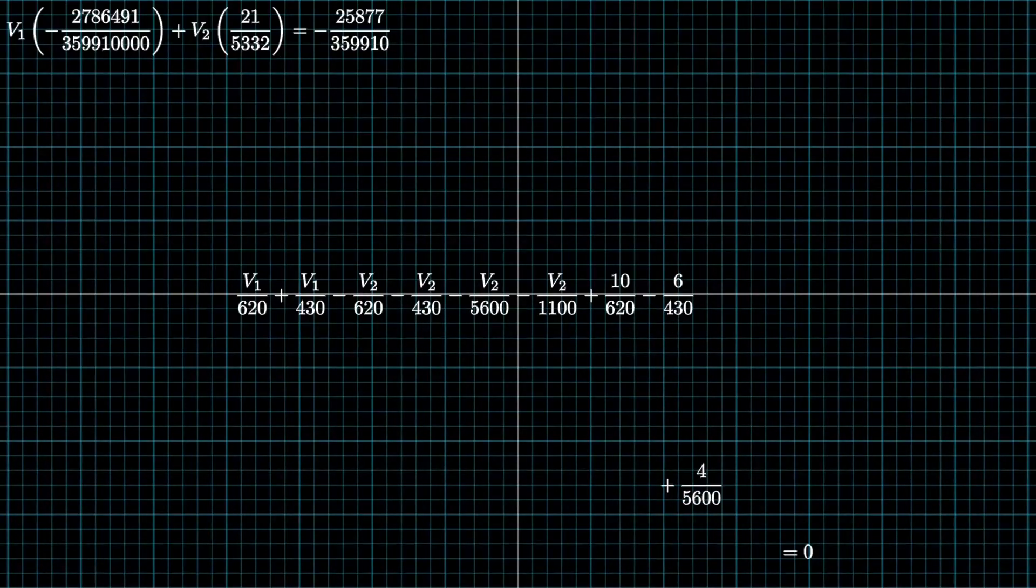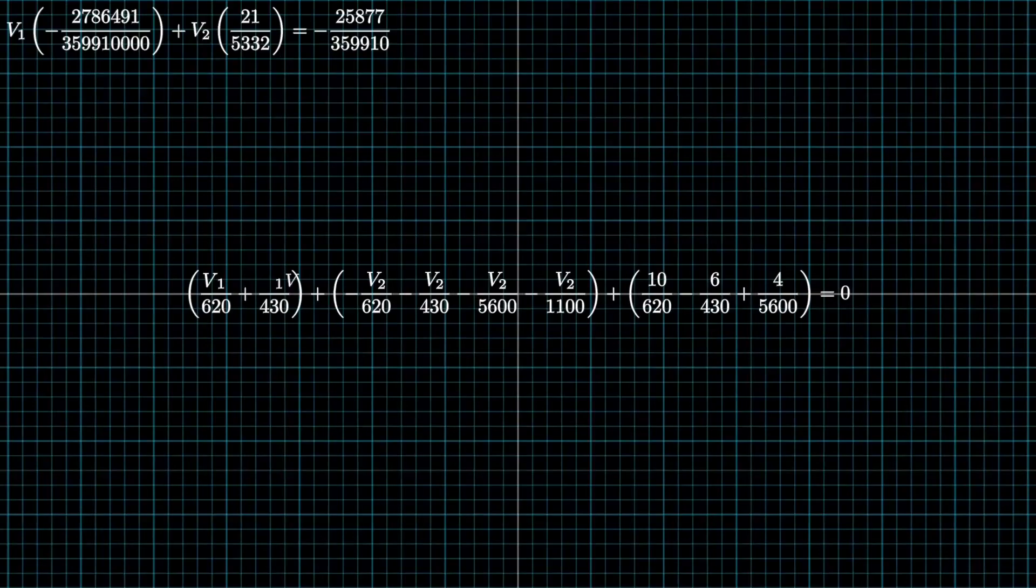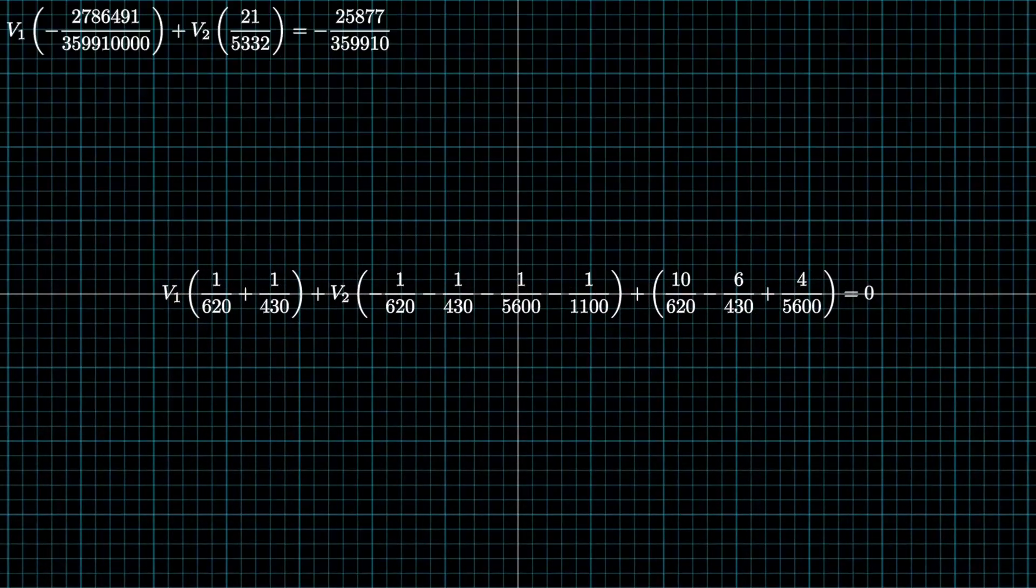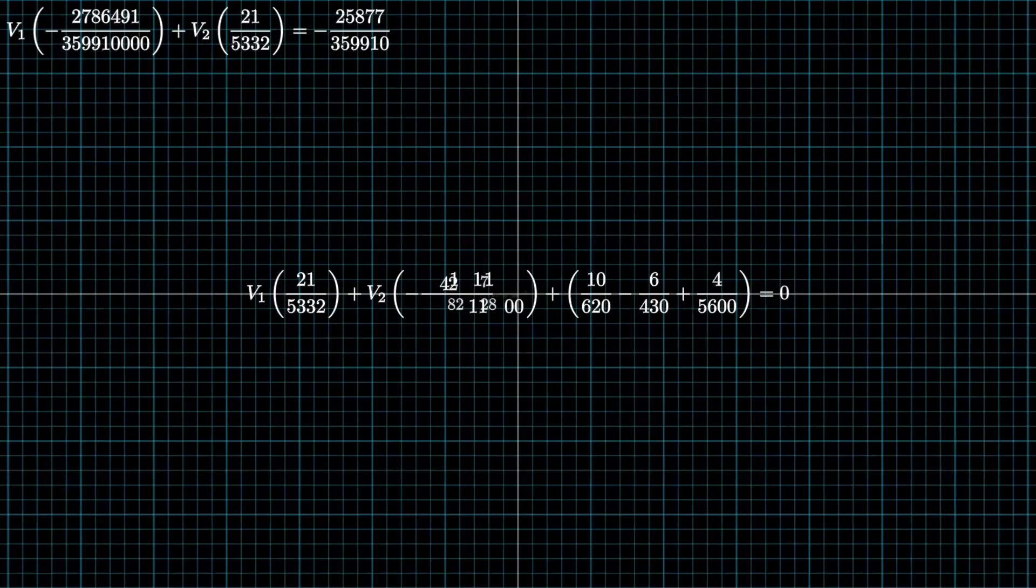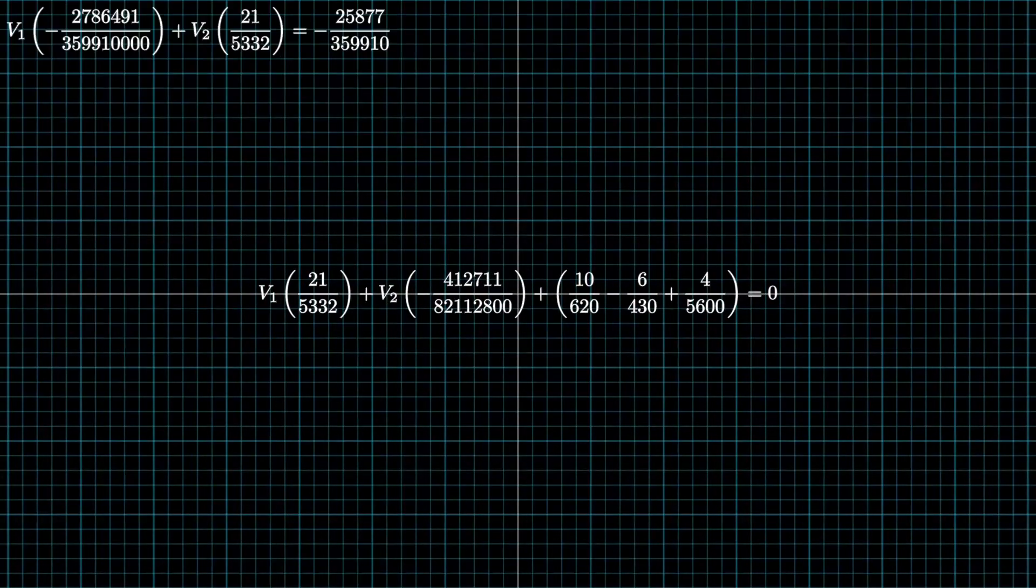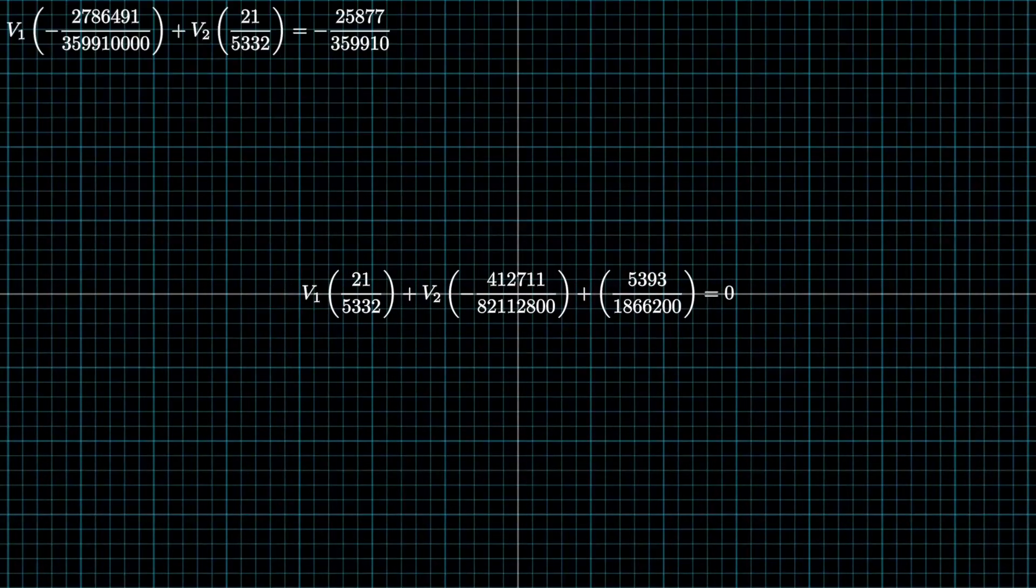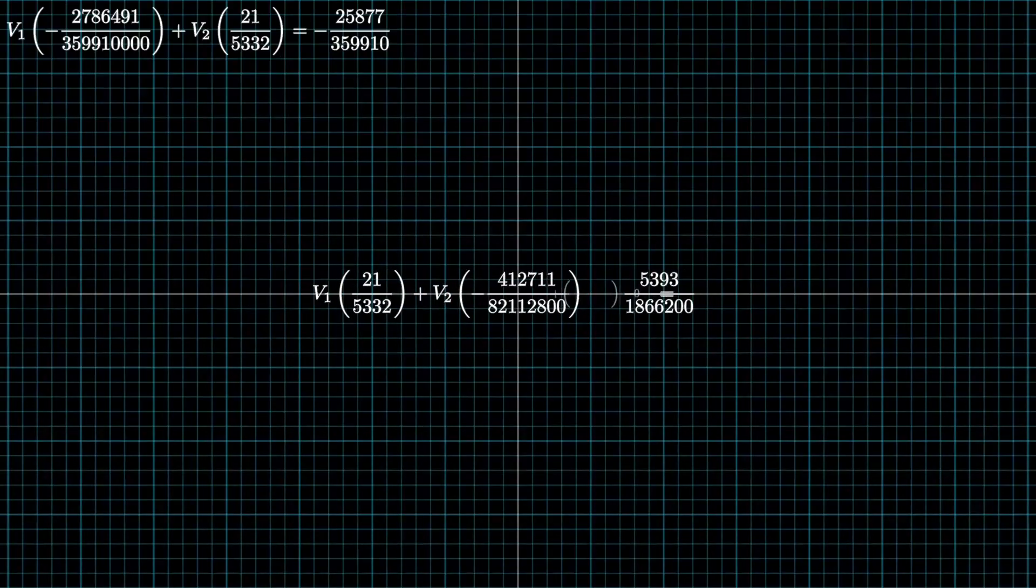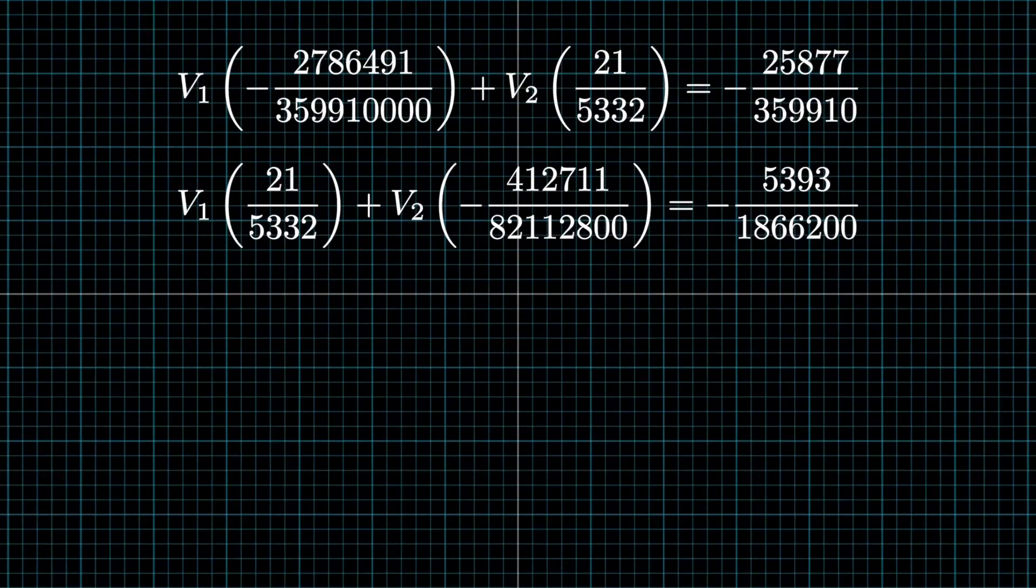And now what we're going to do is draw some parentheses again. So we can factor out V1, factor out V2, simplify the fractions, which I wouldn't call them entirely simplified because they don't look simple. But whatever. We're going to move this crazy constant onto the other side, and two equations, two unknowns.